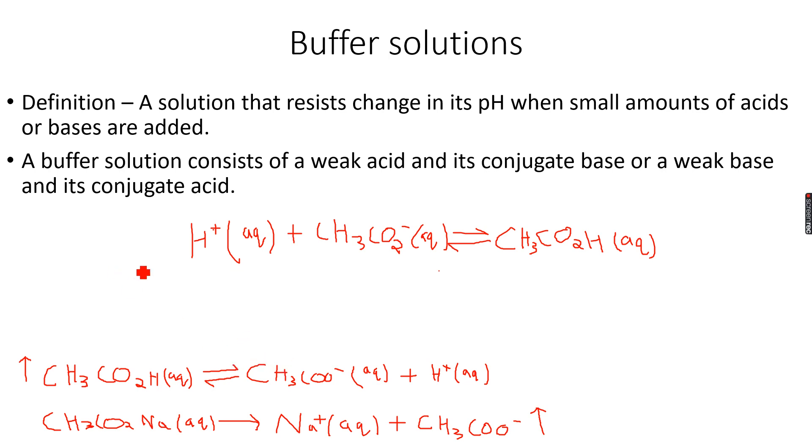Oppose the increase in the amount of H+ ions, and hence the amount of H+ ions will decrease as more of ethanoic acid will be formed. So there will be no overall change in the pH.